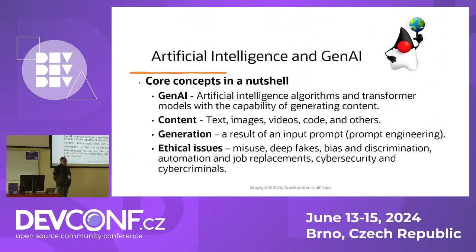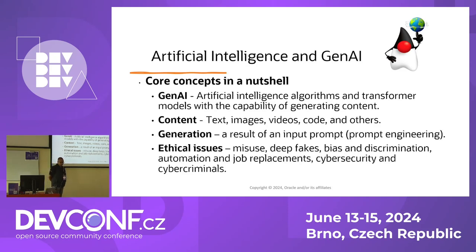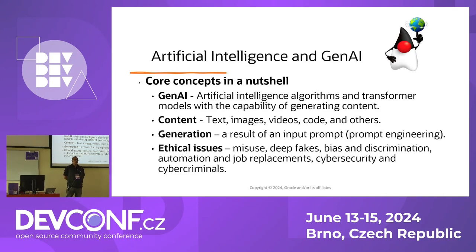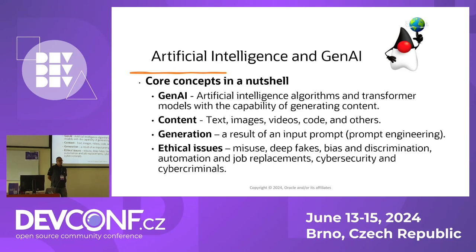Speaking of GenAI, in a nutshell and some core concepts just to set the stage so everyone is on the same page: it's about the usual algorithms that we as software engineers are used to, but with a different focus — we have the so-called transformer models. The T in GPT stands for transformer. Those models have the capability of generating content, including code. We have GitHub Copilot, many other initiatives, open source models by IBM and Red Hat as well for code generation.